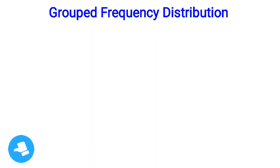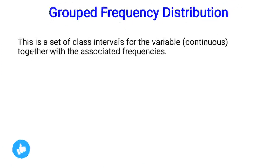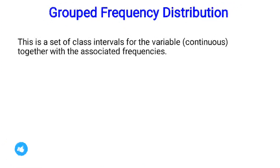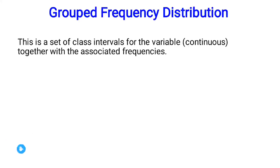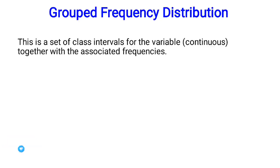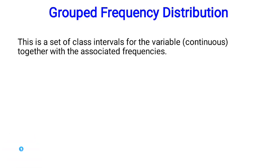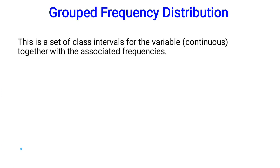Welcome back to our basic class. Today we are looking at grouped frequency distribution. A grouped frequency distribution is a set of all class intervals for a continuous variable together with the associated frequencies. For ungrouped data, the variable is discrete together with the associated frequency, but for grouped data, the variable is continuous because of the class intervals.